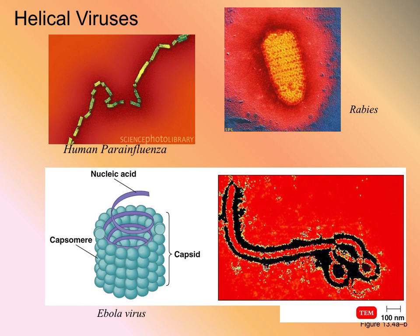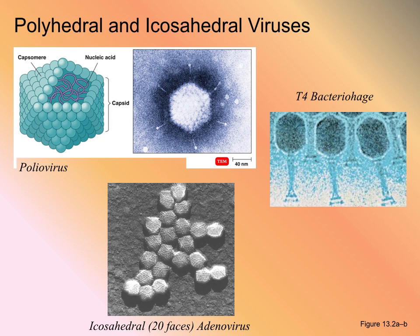Viruses do come in all kinds of different shapes. We have the parainfluenza virus, the rabies virus which looks like a honeycomb, and then the very large and famous Ebola virus. The Ebola virus is notorious for that double loop — they call it a double knot — that's in the capsid.